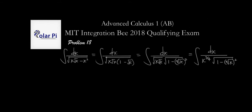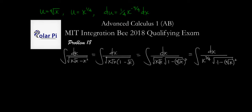We're going to make a u-substitution. We're going to let u equal the fourth root of x, which can be written as x to the one-fourth. That means that du is equal to one-fourth times x to the negative three-fourths dx. We're already happy because we see that this can be written as one over x to the three-fourths, and we have x to the three-fourths right there. So dx will have to equal four times x to the three-fourths times du.